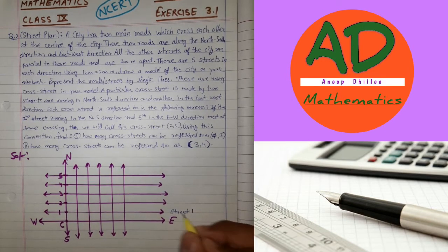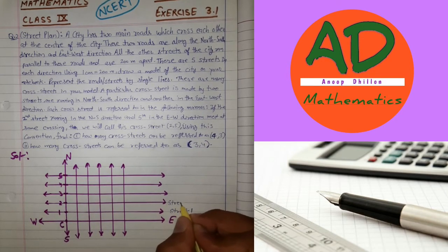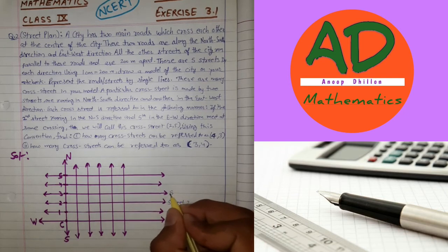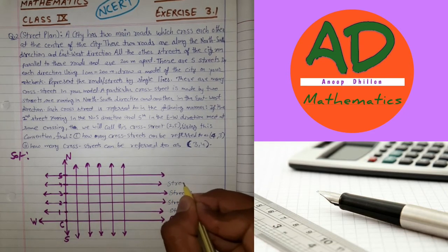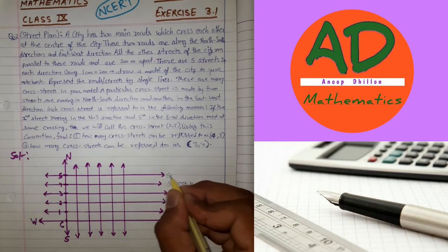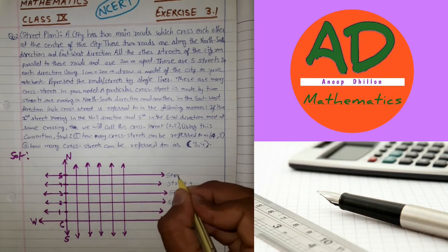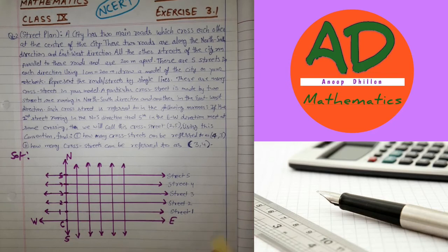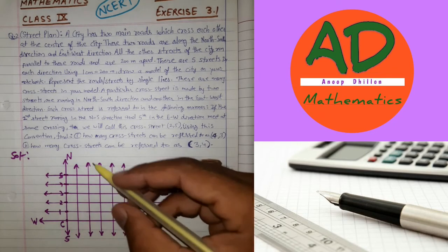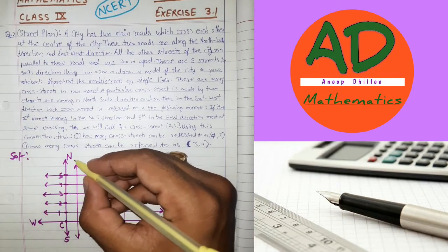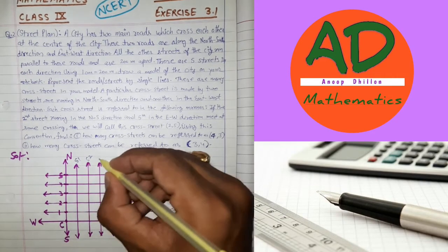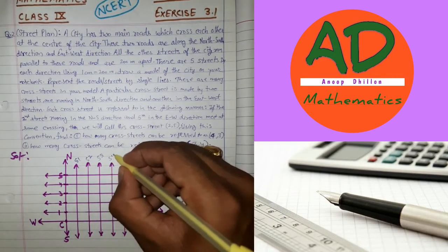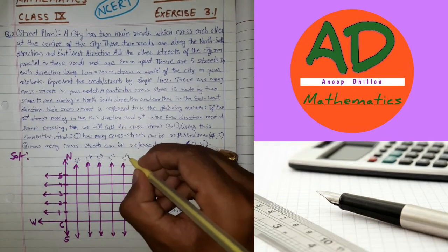Using this convention, in the second road we have Yogi second, Yogi third, Yogi fourth, and this is our next fifth. In the East-West direction, we have Street 1 (S1), S2, S3, S4, and this is S5.